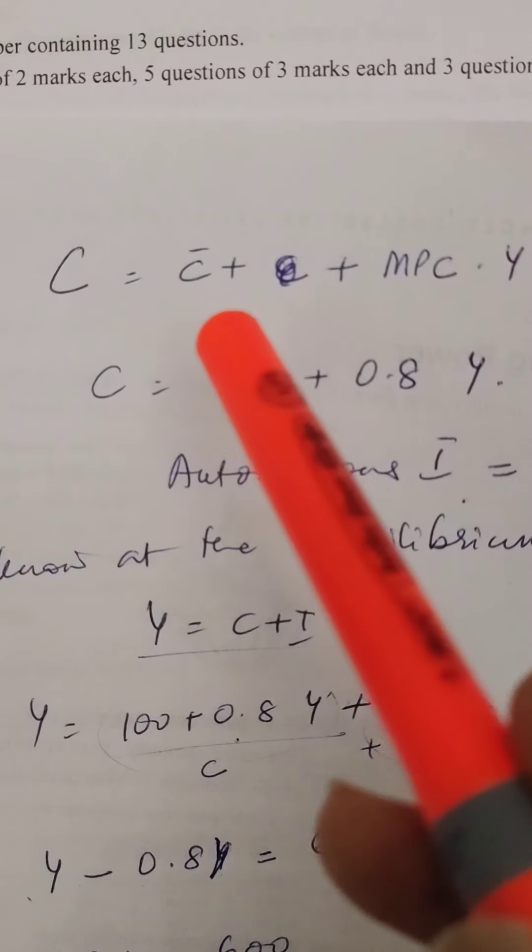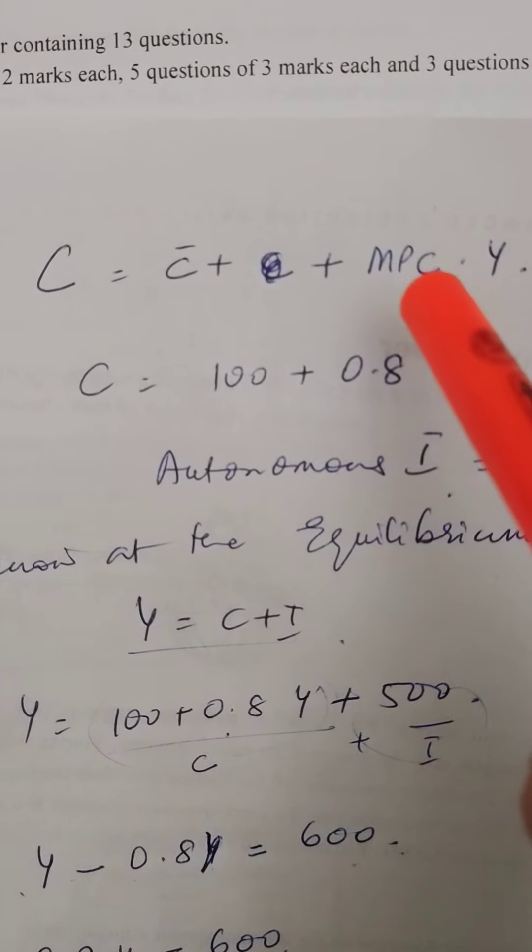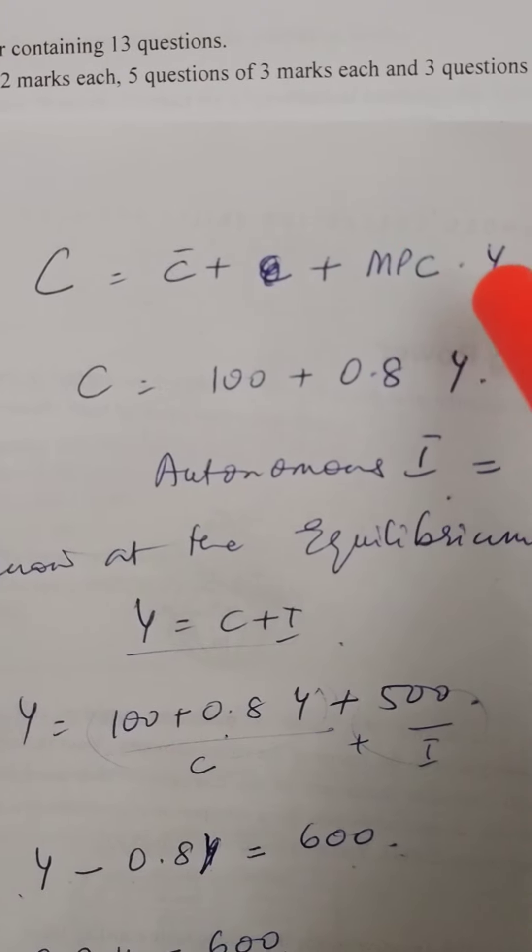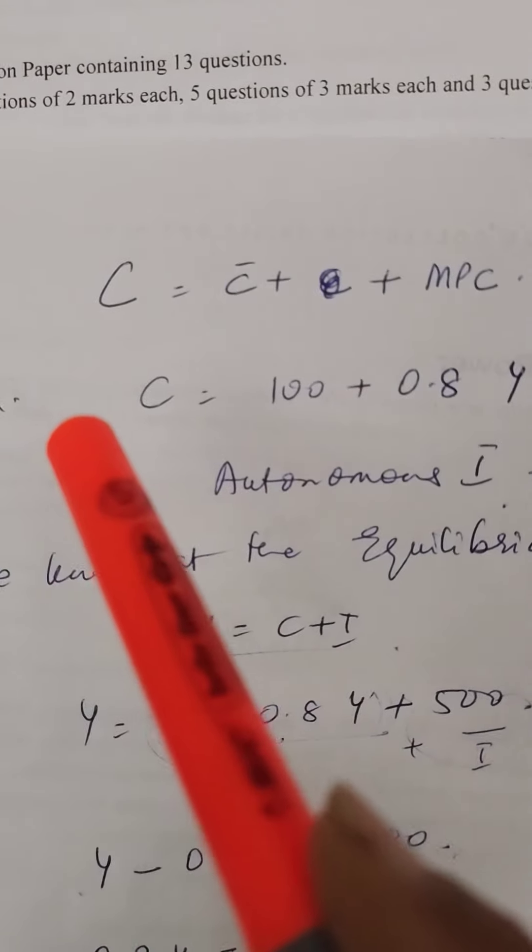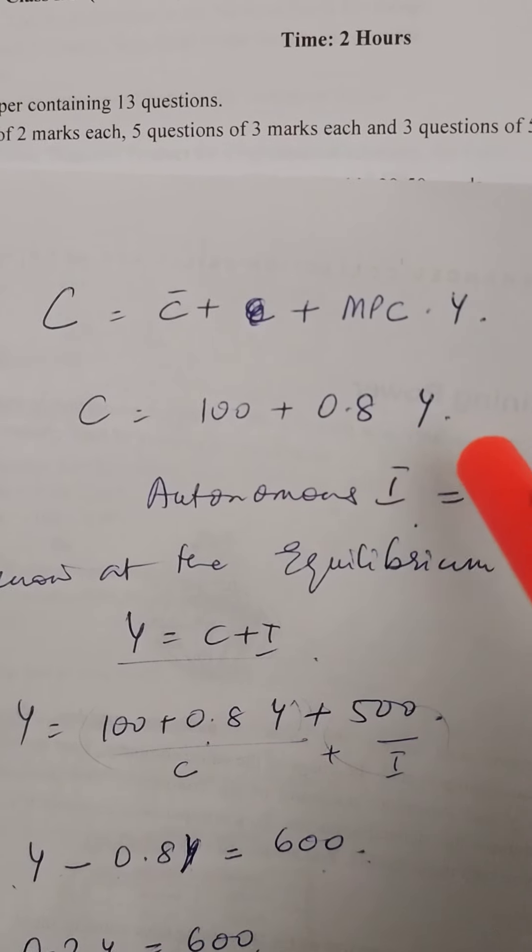C is equal to C dash, that is autonomous consumption, plus the slope of the consumption curve, that is MPC (change in C upon change in Y), into Y.